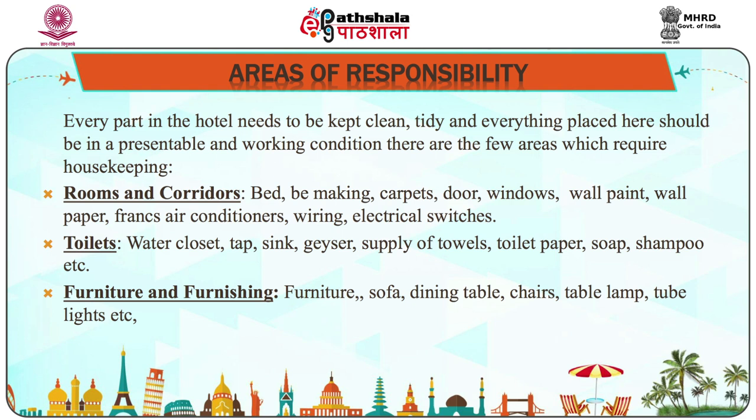Rooms and corridors: Bed making, carpet, doors, windows, wall paint, wallpaper, fences, air conditioners, wiring, electrical switches. Toilet: Water closet, tap, sink, geyser, supply of towels, toilet paper, soap, shampoo, etc. Furniture and furnishing: Sofa, dining table, chairs, table lamp, tubes, light, etc.